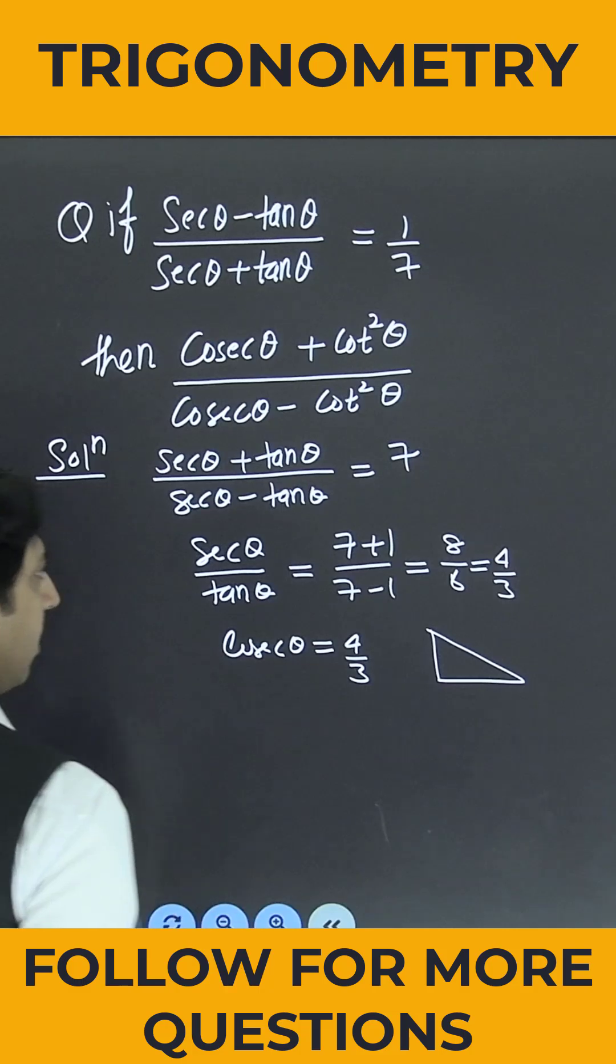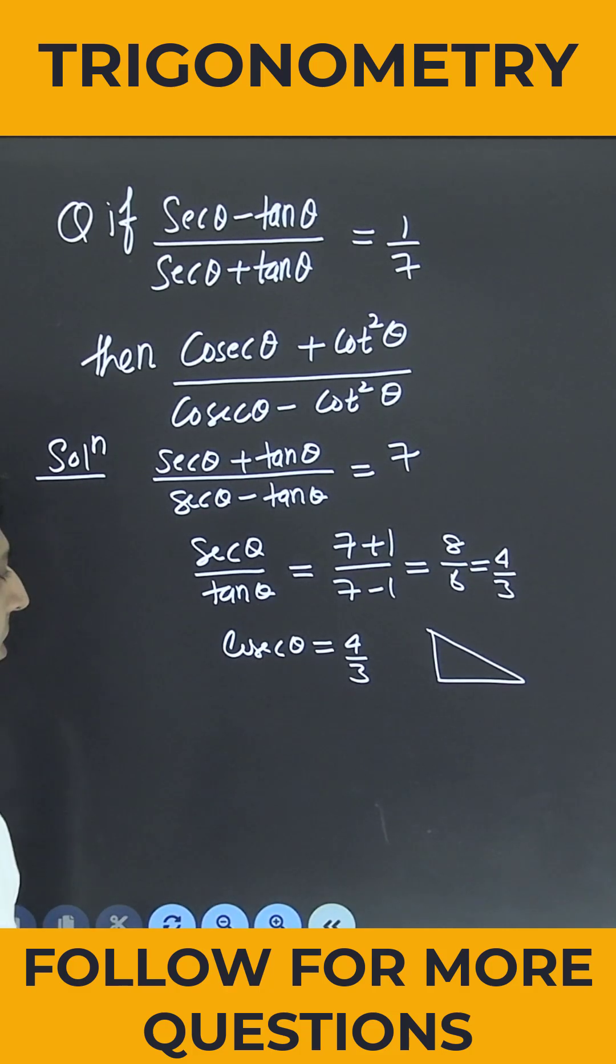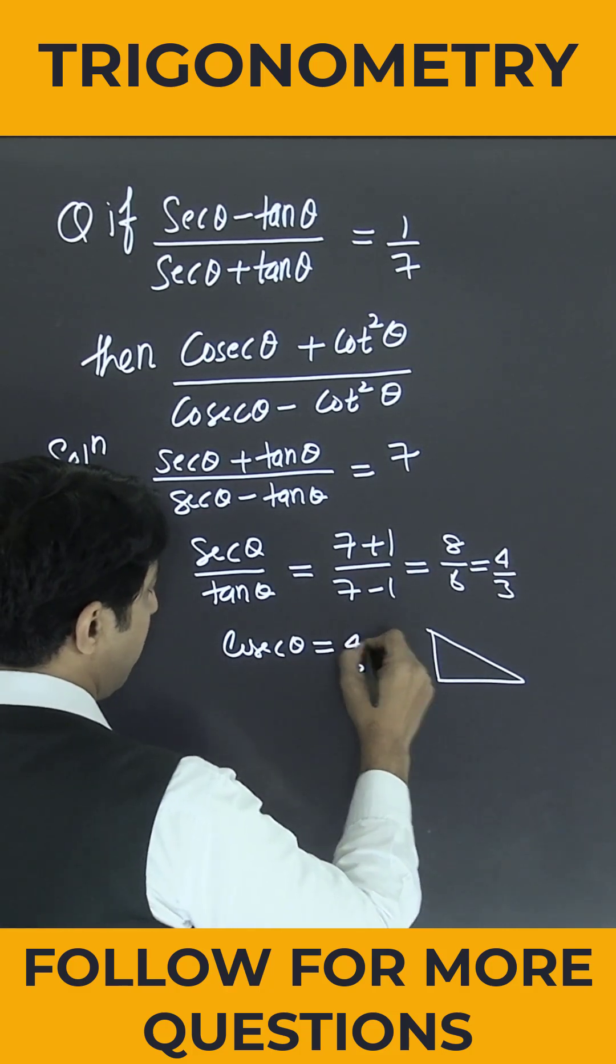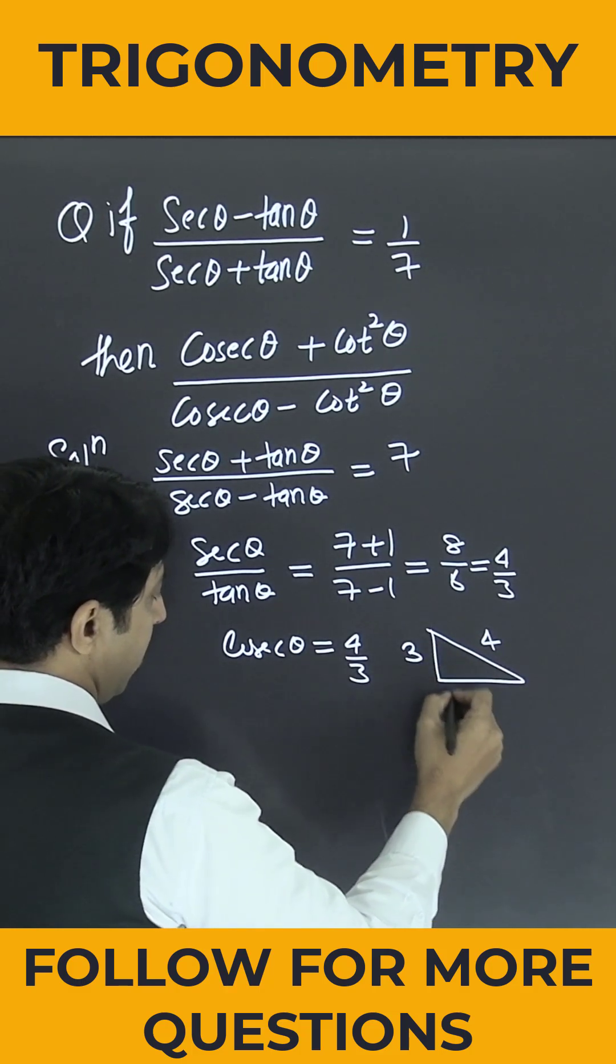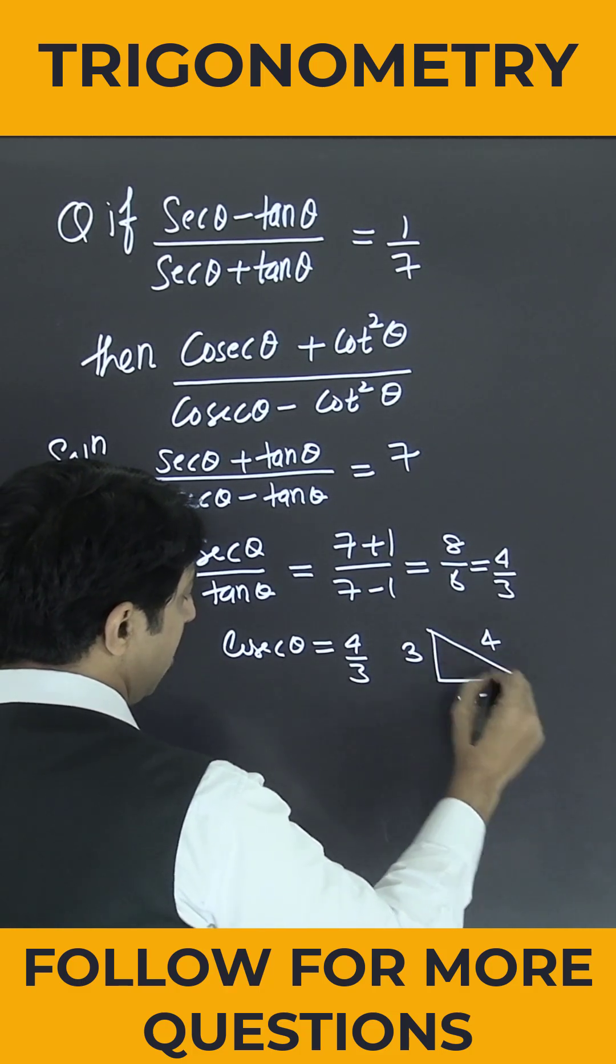Now if you draw the right angle triangle, you know cosec θ is hypotenuse divided by perpendicular. So hypotenuse is 4, perpendicular is 3. So what will be the value of base? It will be root 7.